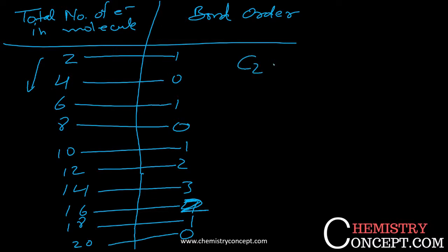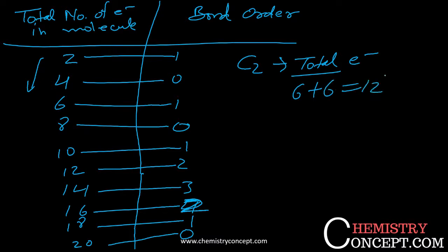For example, take C2. The total number of electrons is 6 plus 6, which is 12 electrons. Looking at the table, 12 electrons gives a respective bond order of 2. So in C2, the bond order is 2.